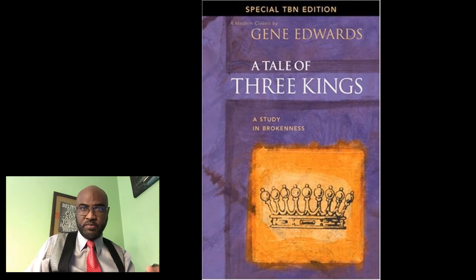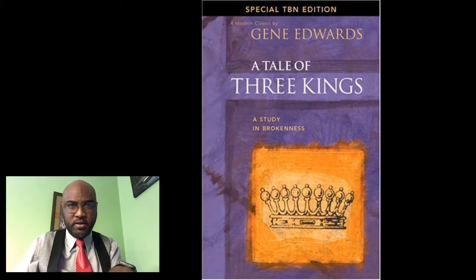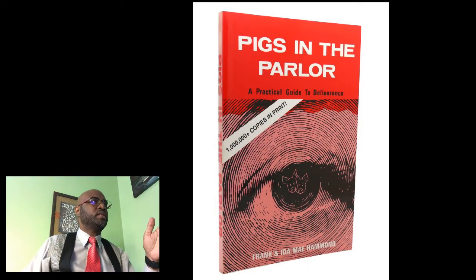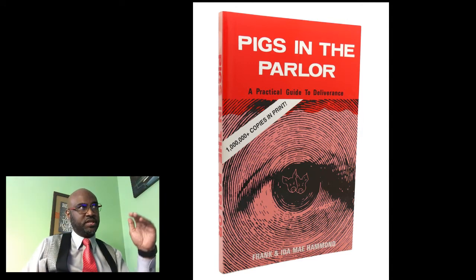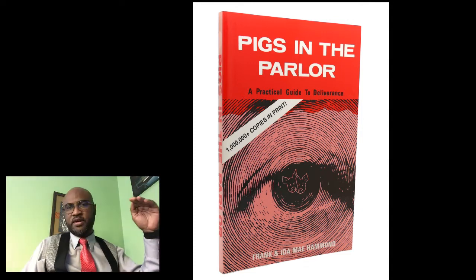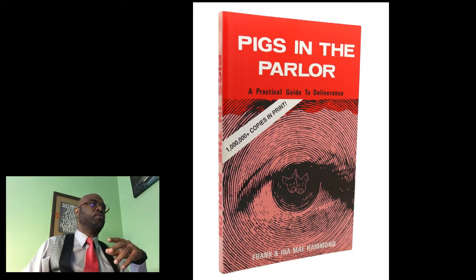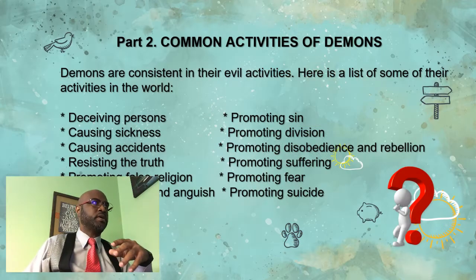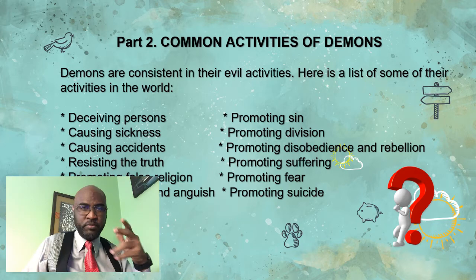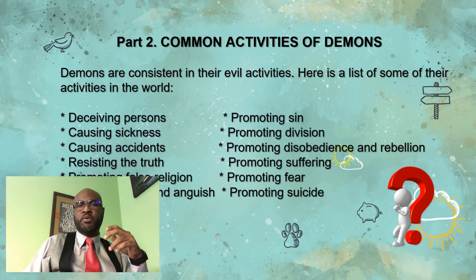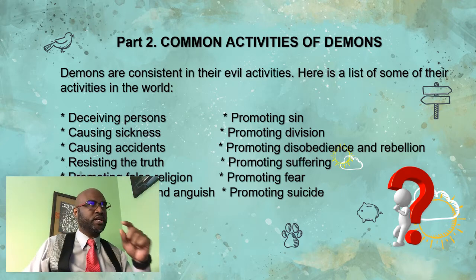For understanding our adversary who goes about like a roaring lion seeking whom he may devour, 'Pigs in the Parlor' is your book. I want to recommend chapter 20 especially. In this segment we're talking about what demons are — how they operate and what they do. They resist the truth, promote suffering, promote false religion, promote fear, and especially promote suicide — that's described as their crown jewel. They also promote stress and anxiety.